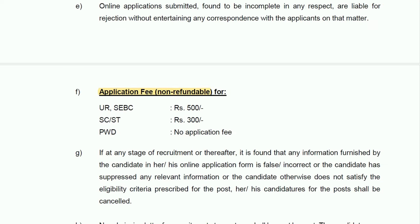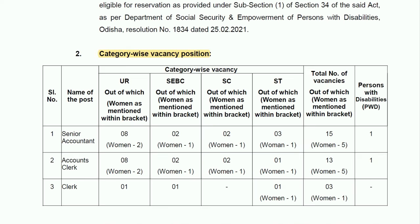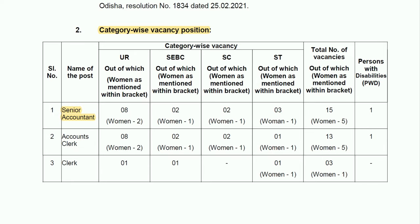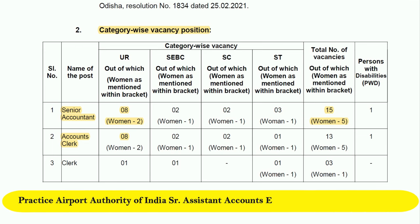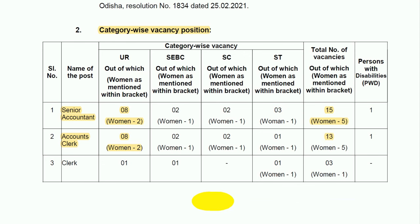Now for application fee: Unreserved category and SEBC category candidates are required to pay ₹500 as application fee. For SC/ST it is ₹300, and for PWD category candidates there is no application fee. Category-wise, for Senior Accountant out of 15 total vacancies, 5 are reserved for women candidates. For Accounts Clerk out of 13 total vacancies, 5 are reserved for women candidates. For Clerk, out of 3 vacancies, 1 vacancy is reserved for women candidates.